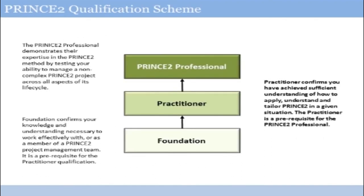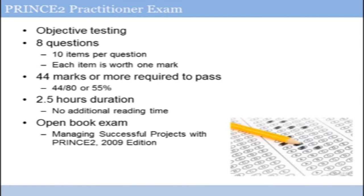There are three levels of PRINCE2 qualification. Most of you by now will have earned your PRINCE2 Foundation certificate, and that is a required prerequisite before you can sit the PRINCE2 Practitioner examination. PRINCE2 Practitioner is used to help confirm that you can effectively adapt and apply the skills in PRINCE2 to a particular project situation. The highest level credential, called PRINCE2 Professional, allows you to demonstrate your expertise to manage an entire PRINCE2 project across the entire life cycle. This course is a preparation for the PRINCE2 Practitioner exam.